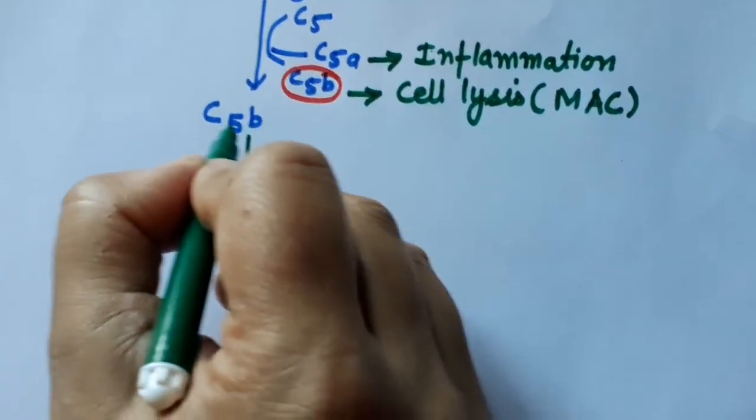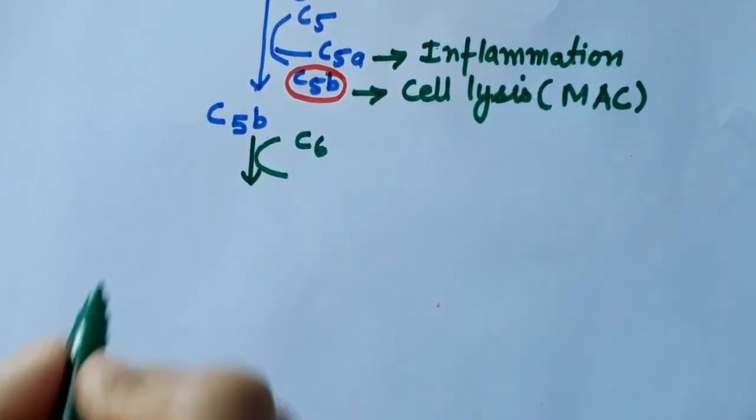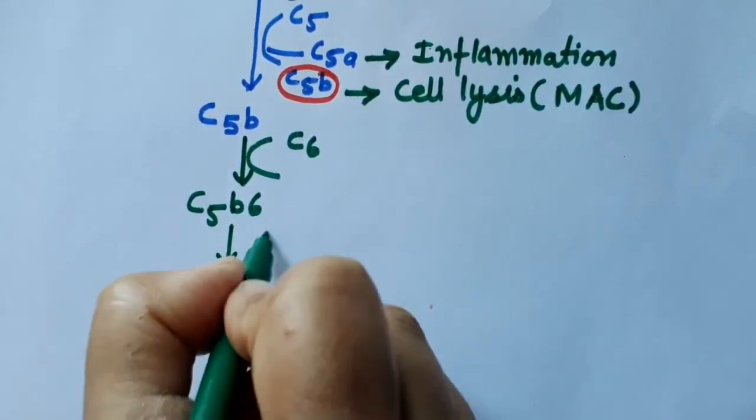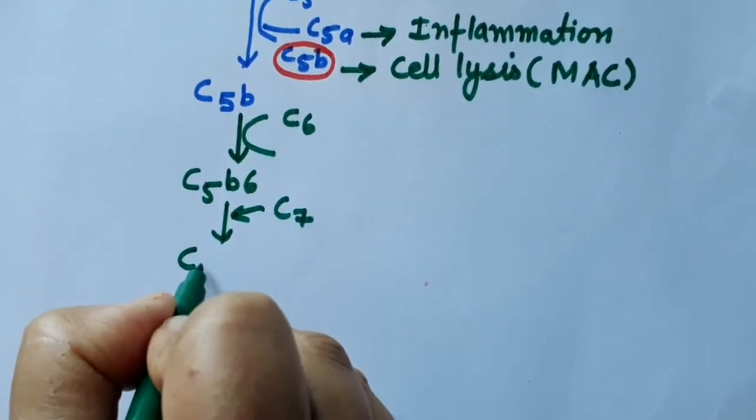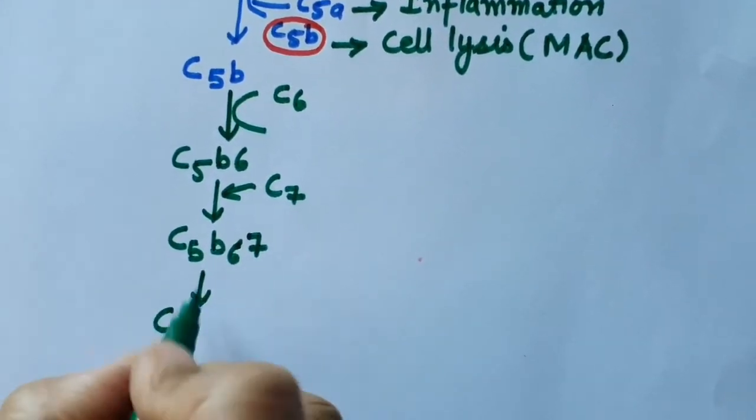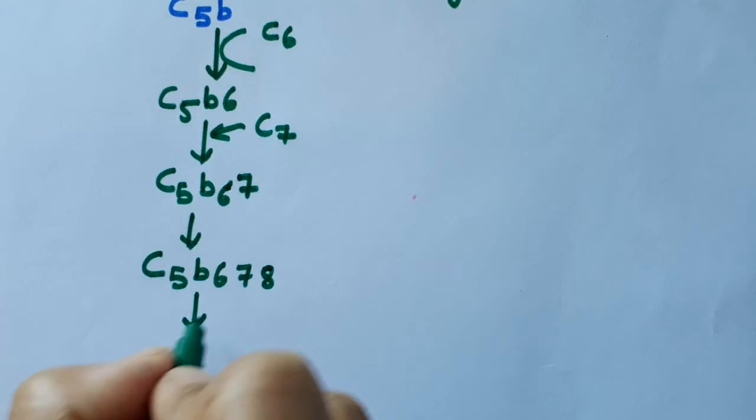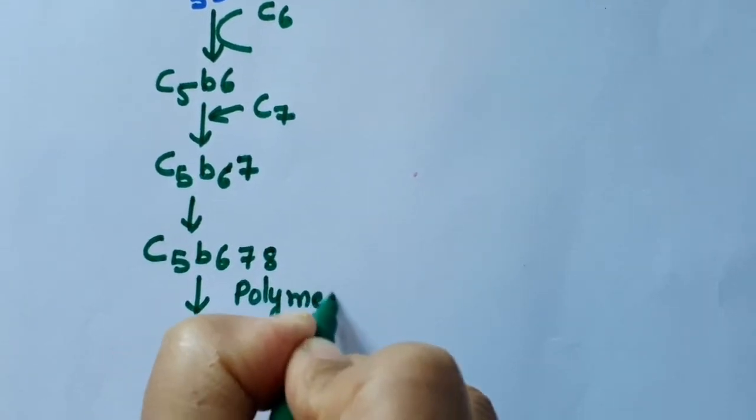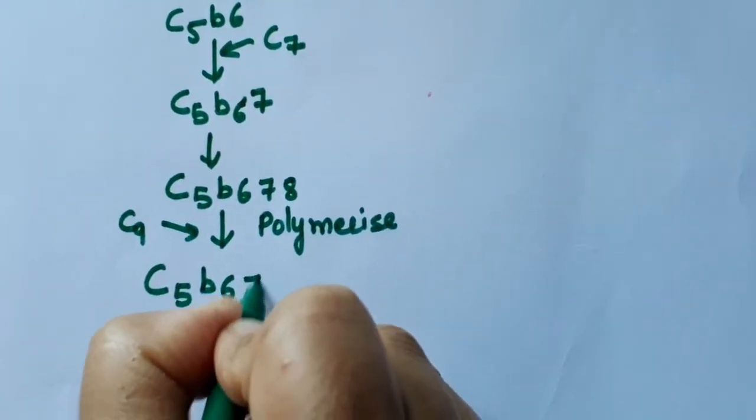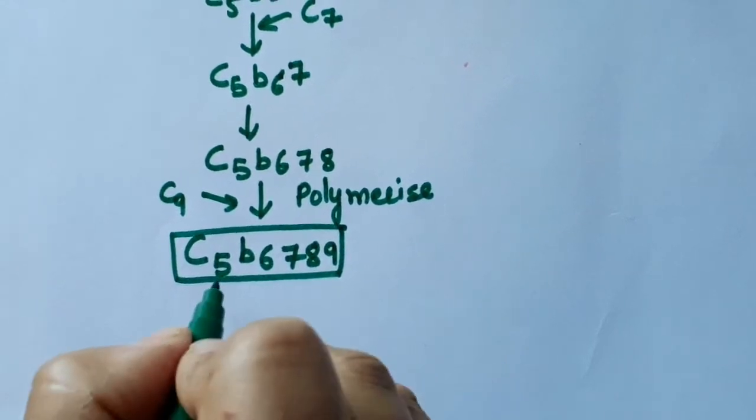C5B in presence of C6 joins to form the C5B6 complex. In the next step, C7 will join and form C5B67 complex. This complex then finally polymerizes C9 and forms C5B6789 complex which lyses the membrane of the pathogen.